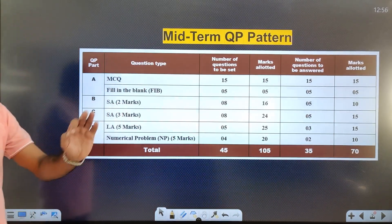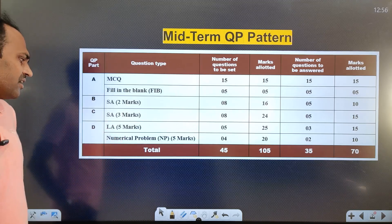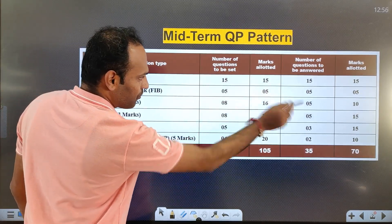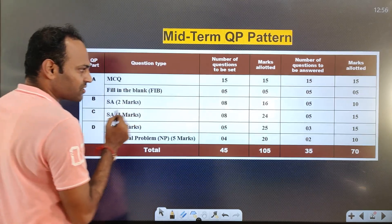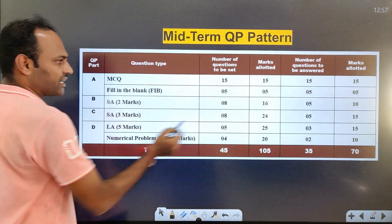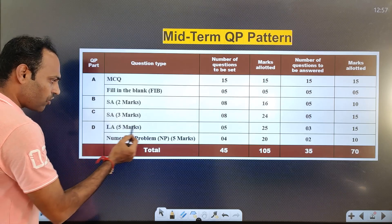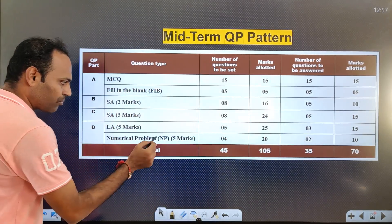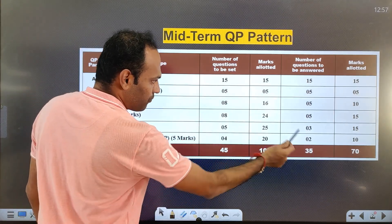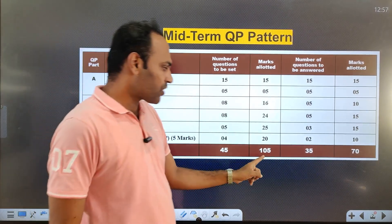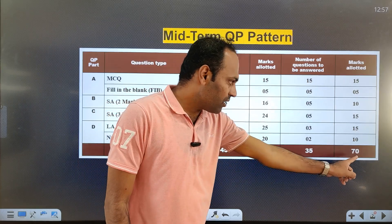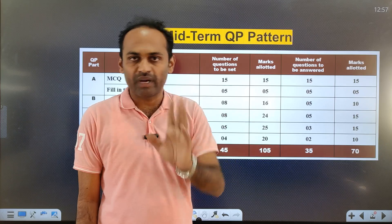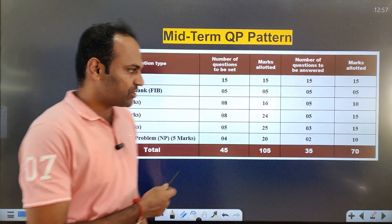The midterm exam pattern is the same as the annual exam pattern. You have 15 MCQs, 5 fill in the blanks, 8 short answer questions of 2 marks each with 5 to answer, 8 short answers of 3 marks with 5 to answer, 5 long answer derivations with 3 to answer, and 4 numerical problems of 5 marks each with 2 to solve. The total question paper is 105 marks and you have to answer for 70 marks.